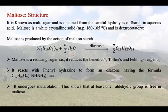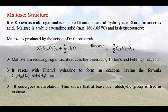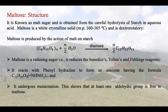Maltose is a reducing sugar — it reduces Benedict's and Fehling's reagents. This means that at least one ring is having a free aldehydic or ketonic group. That is, it has an aldose or ketose group, and the ketose group converts into an aldose before showing reducing nature.